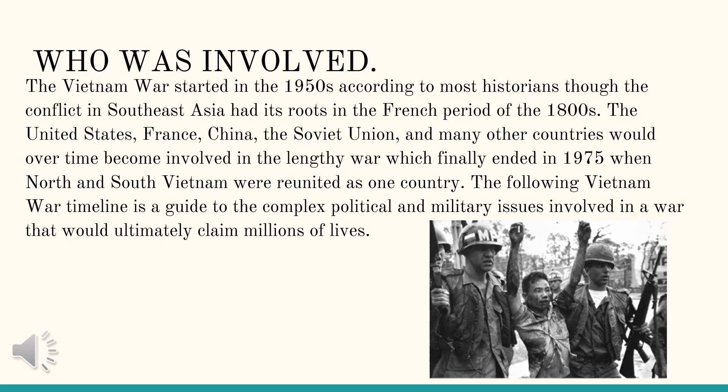Who was involved? The Vietnam War started in the 1950s according to most historians, though the conflict in Southeast Asia had its roots in the French period of the 1800s. The United States, French, China, Soviet Union, and many other countries would over time become involved in the lengthy war, which finally ended in 1975 when North and South Vietnam were reunited as one country. The following Vietnam War timeline is a guide to the complex political and military issues involved in a war that would ultimately claim millions of lives.